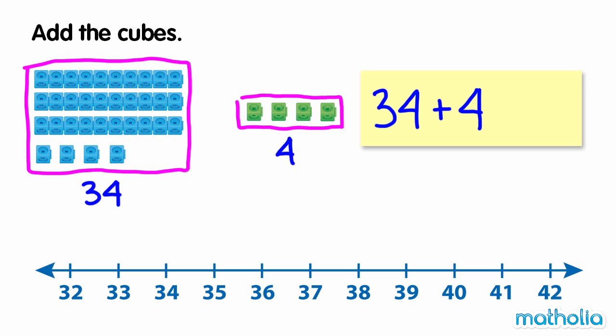We can add the numbers by starting at 34 and counting on by 4 ones. 34, 35, 36, 37, 38. 34 plus 4 equals 38. There are 38 cubes.